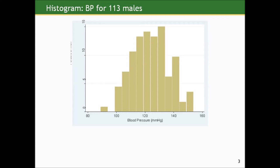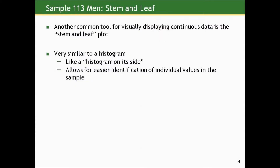Another common tool for visually displaying continuous data is called the stem and leaf plot. It actually looks very similar to a histogram — like a histogram you knocked on its side. What it allows for above and beyond the histogram is the identification of individual values in the sample from the graphic. When you look at a histogram, you can talk about the percentage or number of values that fall within a certain range, but you can't necessarily identify the exact numerical values. Whereas with a stem and leaf, you can do that as well.